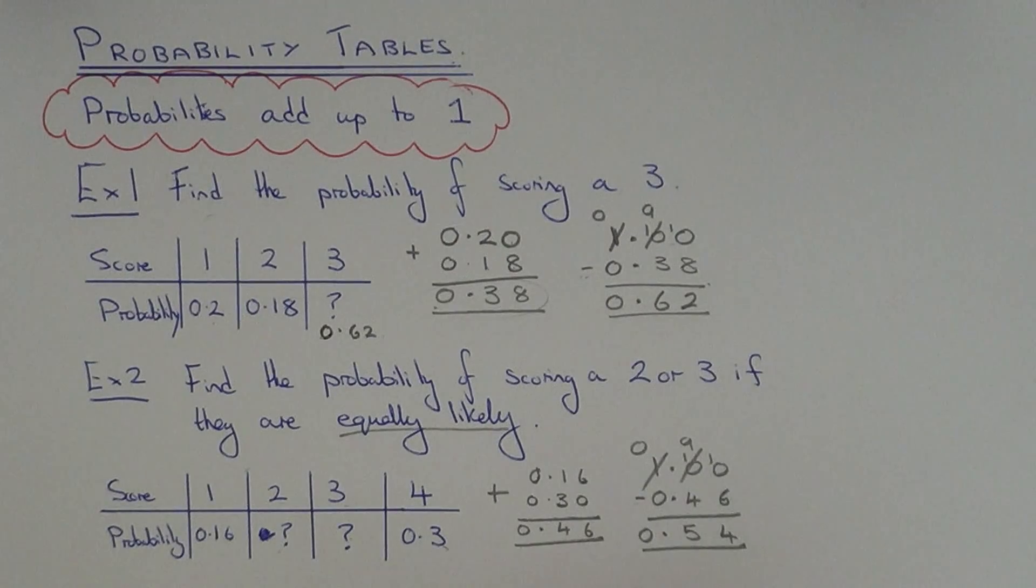Right, now this won't be our final answer, because if we put them both as 0.54, it will give us a total more than 1. So we've got one extra thing to do now, and that is to half this answer. So if we do 0.54 divided by 2, that will give us 0.27. So the probability of scoring a 2 and a 3 is 0.27.